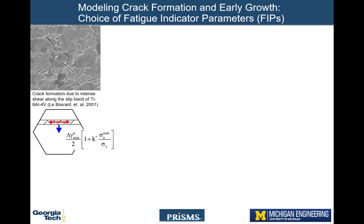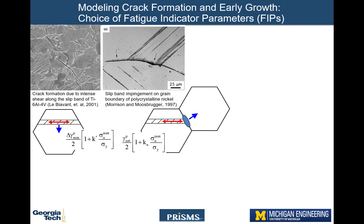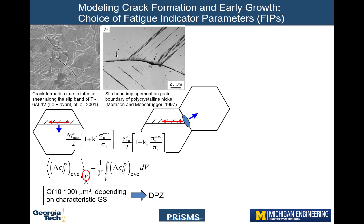The fatigue crack formation driving force is modeled using fatigue indicator parameters, or FIPs. Many different FIP formulations exist which model different fatigue damage mechanisms in polycrystalline metals and alloys. The Fatemi-Socie FIP shown here is commonly used to capture the fatigue crack formation driving force due to intense shear along slip bands with the contribution of the stress normal to these slip bands. Another type is the grain boundary impingement FIP, which considers the accumulation of irreversible plastic shear strain at a grain boundary and the stress normal to this grain boundary. In these simulations, FIPs are computed at every integration point and must be subsequently volume averaged to reduce the effect of mesh sensitivity and to reflect the physical damage process zone in which fatigue crack embryos form.